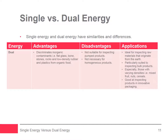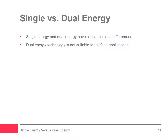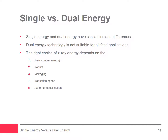However, dual energy is not suitable for inspecting pumped products or detecting small metal contaminants. As this webinar shows, dual energy x-ray systems are not the best option for all food applications, and it is important to understand which technology will meet your inspection needs. There are some instances where dual energy will be best and equally many others where single energy will provide a better solution. The right choice of x-ray energy depends on five factors: the likely contaminants, product, packaging, production speed, and customer specifications. Each application should be independently evaluated and food manufacturers should seek the advice of a reputable x-ray system supplier before making a decision.